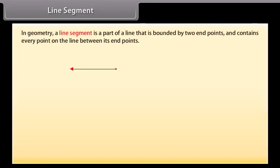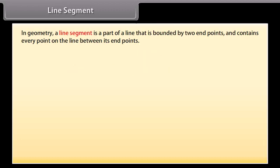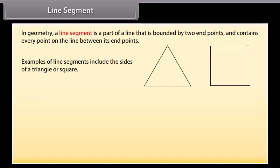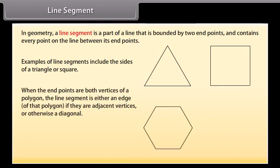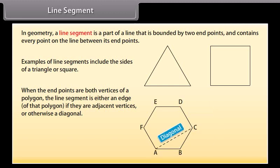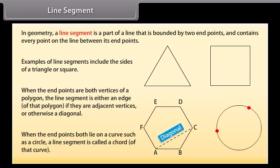In geometry, a line segment is a part of a line that is bounded by two end points and contains every point on the line between its end points. Examples of line segments include the sides of a triangle or a square. More generally, when the end points are both vertices of a polygon, the line segment is either an edge of that polygon if they are adjacent vertices, or otherwise a diagonal. When the end points both lie on a curve such as a circle, a line segment is called a chord of that curve.